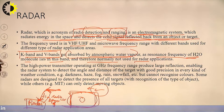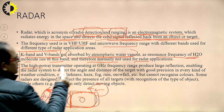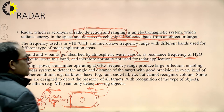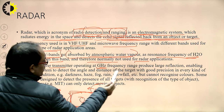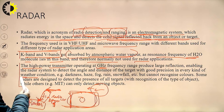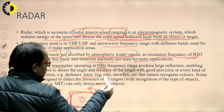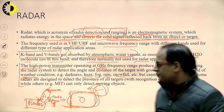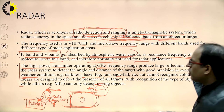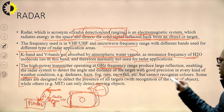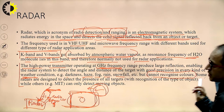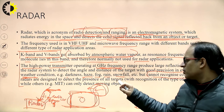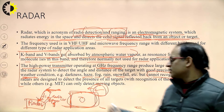In radar, a very high power transmitter operating at GHz frequency produces a large reflection, enabling the radar system to detect the angle and distance of the target with good precision or accuracy in every kind of weather condition — darkness, haze, fog, rain, and snowfall. However, radar cannot recognize the colors of the detected object. Some radars are designed to detect the presence of targets whether static or moving.